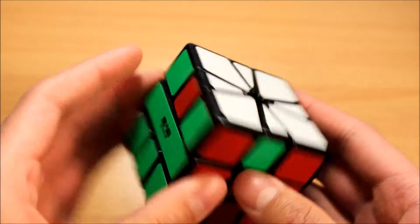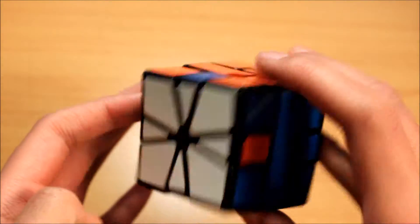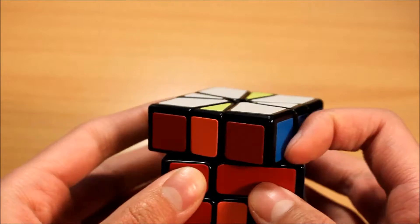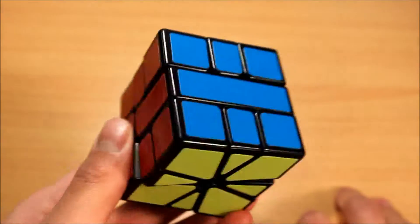For Z-perms, you want to hold it like this. M2, U-prime, M2, U, M2. So that's pretty simple.